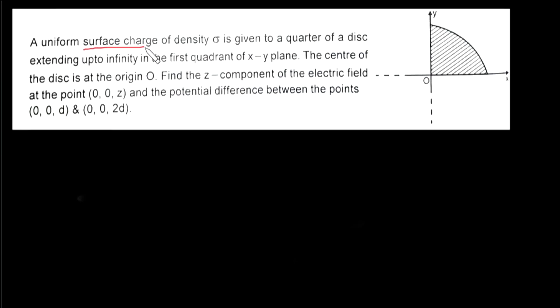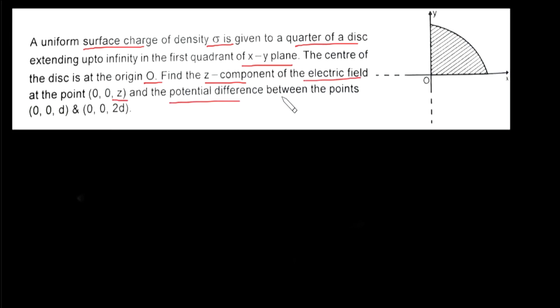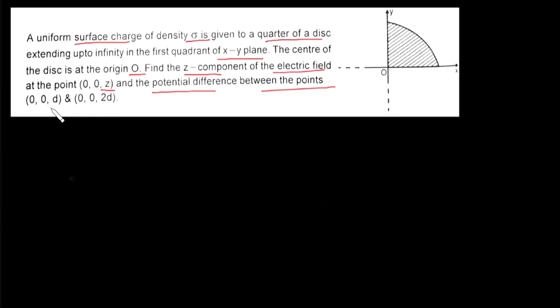In this question, we are given a uniform surface charge density sigma on a quarter of a disk extended up to infinity in the first quadrant of the xy plane. The center of the disk is at origin O. We need to find the z-component of the electric field at point (0,0,z) and the potential difference between points (0,0,d) and (0,0,2d). In one quadrant we have this sheet, and the other quadrants are absent.